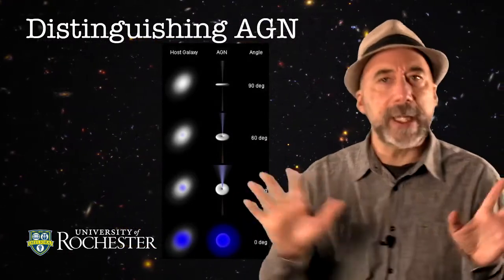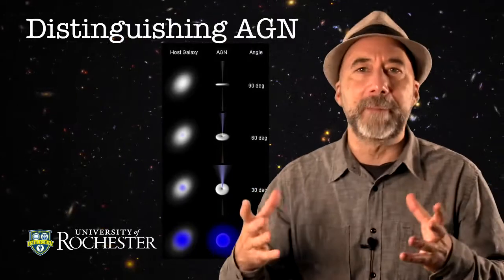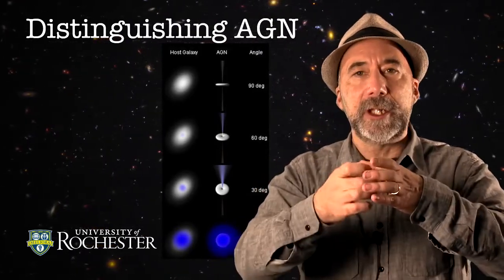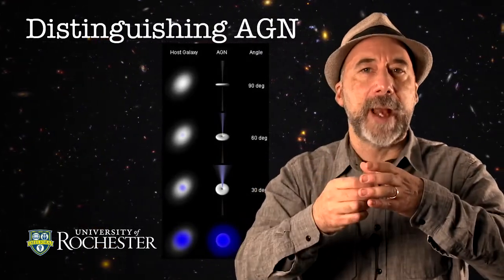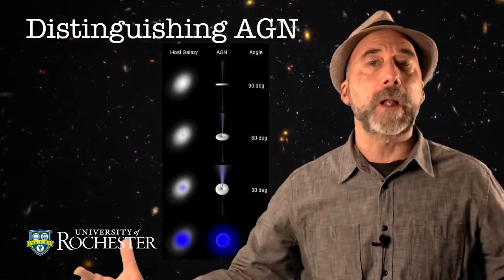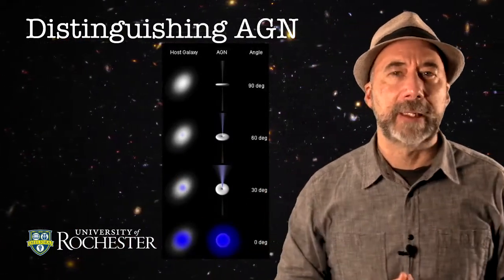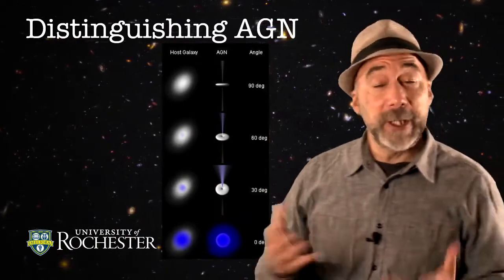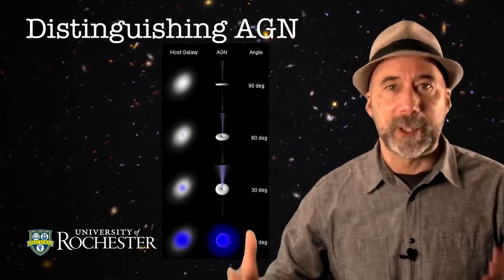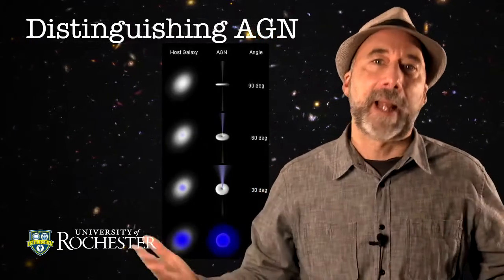Really, it turns out that with just this unifying model — a molecular torus, an accretion disk, and a supermassive black hole — we're able to actually embrace all of the phenomena, all of the different types of active galactic nuclei. And when you come up with something like that as a scientist, you get really excited, because you've found simplicity in complexity.